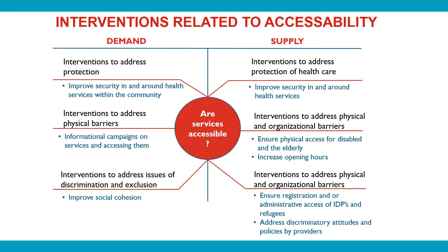Addressing the different accessibility barriers includes interventions such as improving security and protection so that the people of concern can access health services without security risks. This also includes addressing issues of potential discrimination that may prevent them from accessing these services. As accessibility also refers to physical access, in cases where people are unable to travel due to permit issues, an actor could facilitate the provision of a travel permit. CVA can support with transportation or compensate for income lost due to travel or illness. In the case of an administrative issue such as having the right paperwork, particularly for refugees or IDPs, health actors can facilitate ensuring the right paperwork is received.